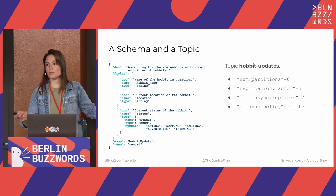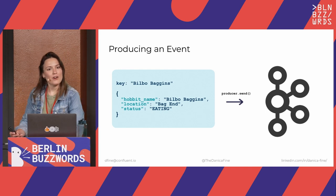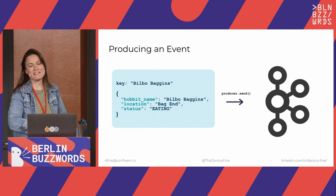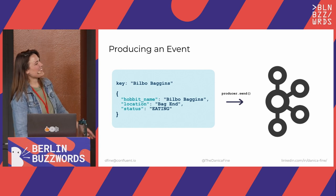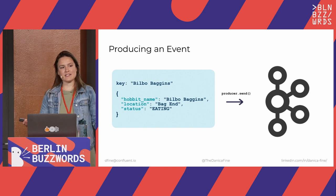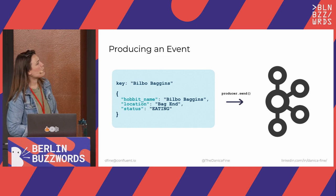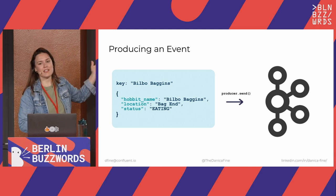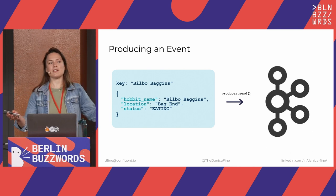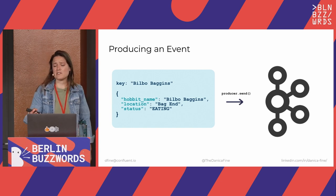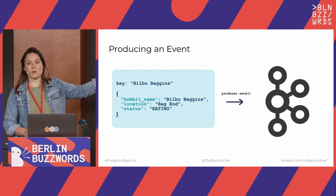So we have a schema. We have a topic. Let's write data into Kafka, and that's easy — you're going to call producer.send. So we're going to write some data. You're going to build up some sort of object or string, some representation of the data you want to move into Kafka. We're going to be smart and assign a key here, keying it by the Hobbit in question. So we've got Bilbo, he is currently in Bag End in Hobbiton where he should be, and he's eating. And we're going to call producer.send to get it into Kafka.